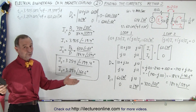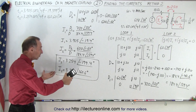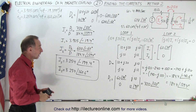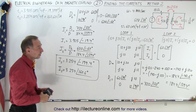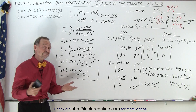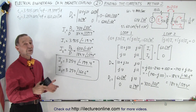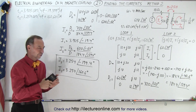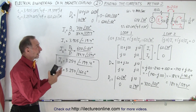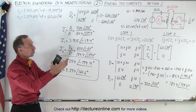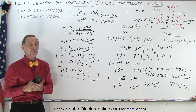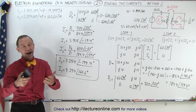Either method is a perfectly good method. Sometimes this is easier, sometimes the other method is easier, depending upon what you end up with. This method is always fail-safe — when things get more complicated, this may be the way to go. Now you've seen the two different methods of finding the currents. Next we want to find the energy stored in the system — in the inductors and the cross-coupling — at a particular moment in time. We'll do that on the next video.